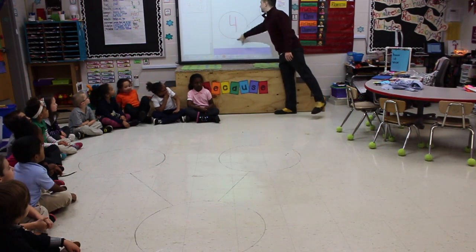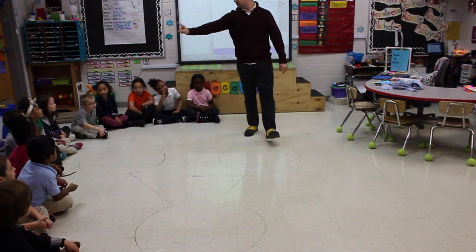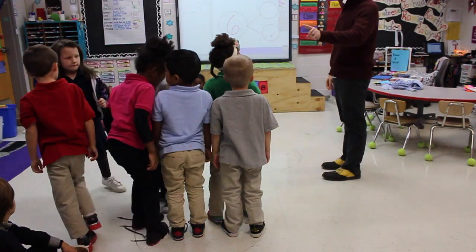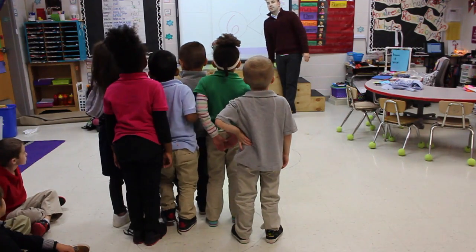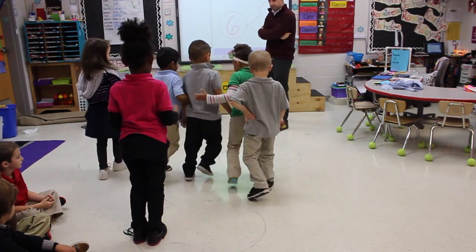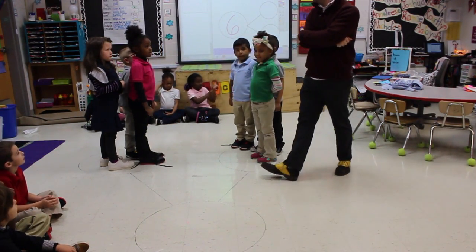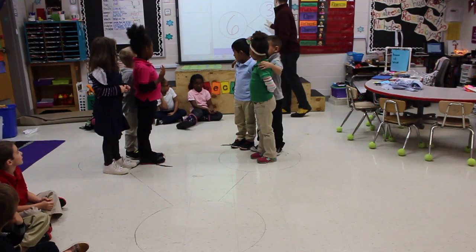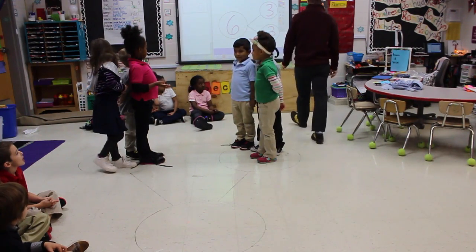Alright, you ready? Yes. Ten. Jamie, not you. You're seven. Three. One, two, three, four, five, six. What does decompose mean? Rip it apart. Decompose yourselves. Very good. So we decompose six into what two numbers? Three and three. Three and three make six. Alright. Thank you guys. Have a seat.